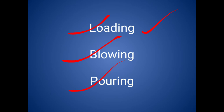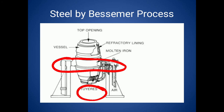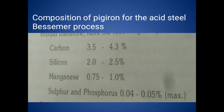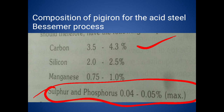The Bessemer converter involves three sections: loading, blowing, and pouring — whether it is acid or basic. Coming to the acid Bessemer process: the pig iron should have low sulfur and low phosphorus, because in the acid Bessemer process we are unable to eliminate sulfur and phosphorus. The pig iron should contain carbon 3.5–4.3%, silicon 2–2.5%, manganese 0.75–1%, and sulfur and phosphorus should be very low.